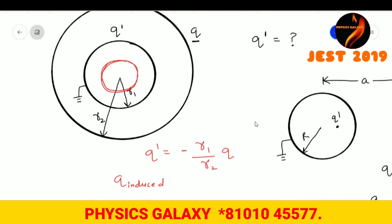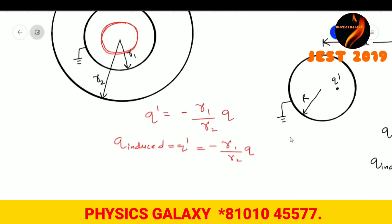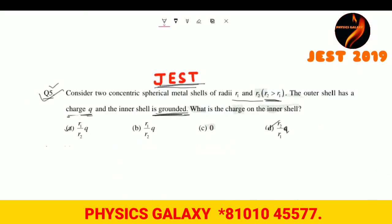So Q induced will be equals to Q', which is equals to minus R1 upon R2 times Q. And if you look at the options, it is minus R1 by R2 times Q. So this is our answer.